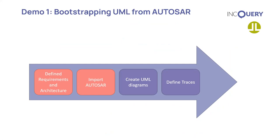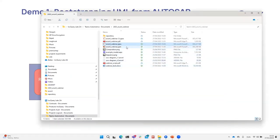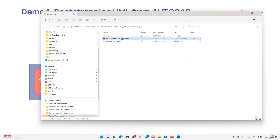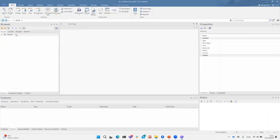In the first demo, we will show the imported AUTOSAR model in EA. We will start with a model containing the system requirements, system architecture, and the imported AUTOSAR model, use AUTOSAR objects to create diagrams, and define appropriate traces to the requirements. One important note: we don't try to replace AUTOSAR authoring tools — that is not the goal. We try to bridge the gap and make AUTOSAR assets work in your Enterprise Architect or broader modeling tool chains.